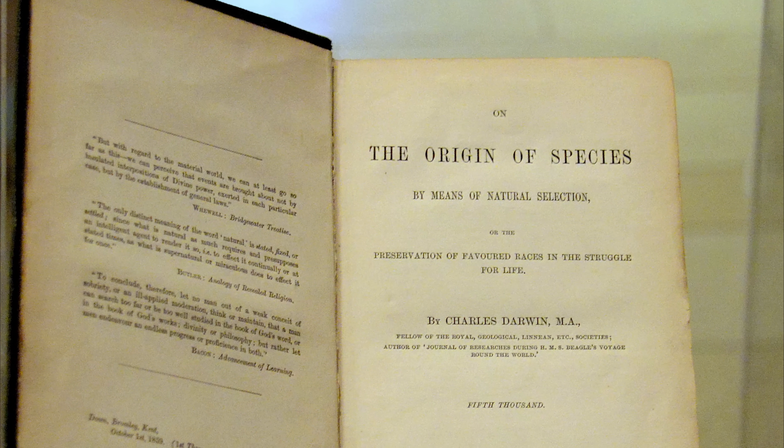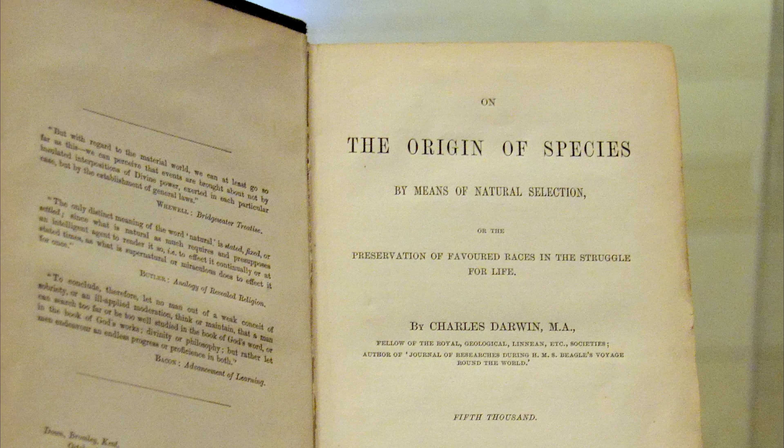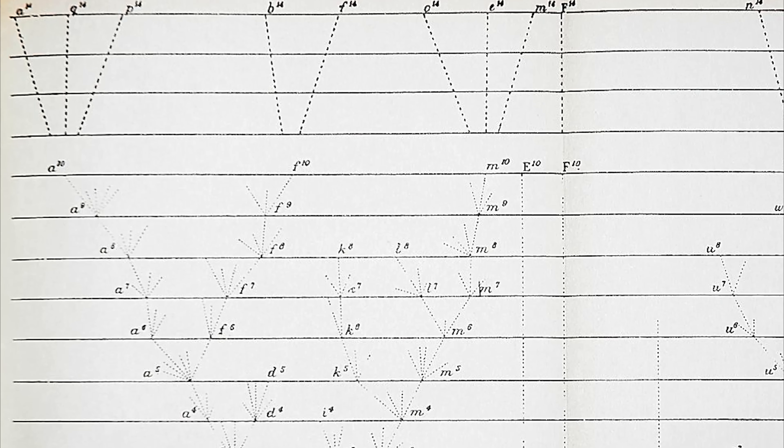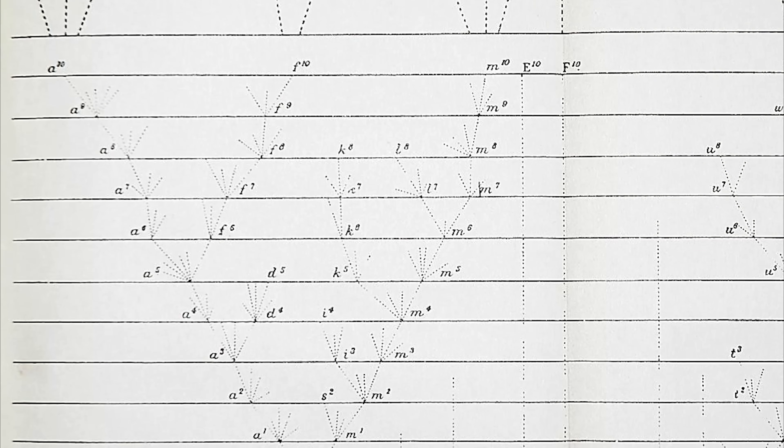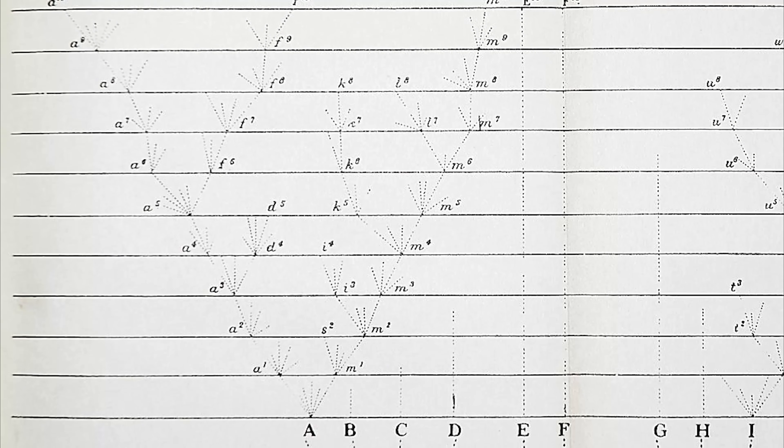Modern eugenics had its origin in the 19th century with British scientist Francis Galton. A polymath who made important contributions to many fields, Galton was hugely influenced by his cousin Charles Darwin's Origin of Species. In his first chapter, titled Variation Under Domestication, Darwin explains how different breeds within a species are often produced from a common ancestor by a process of selective breeding. Galton was the first person to apply Darwin's ideas to humans.